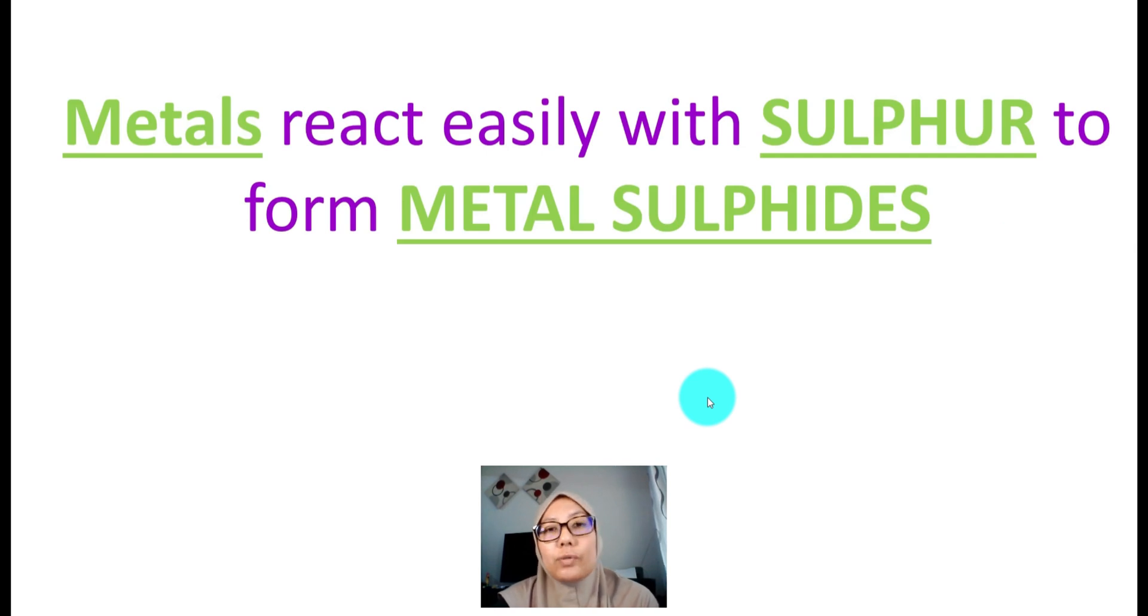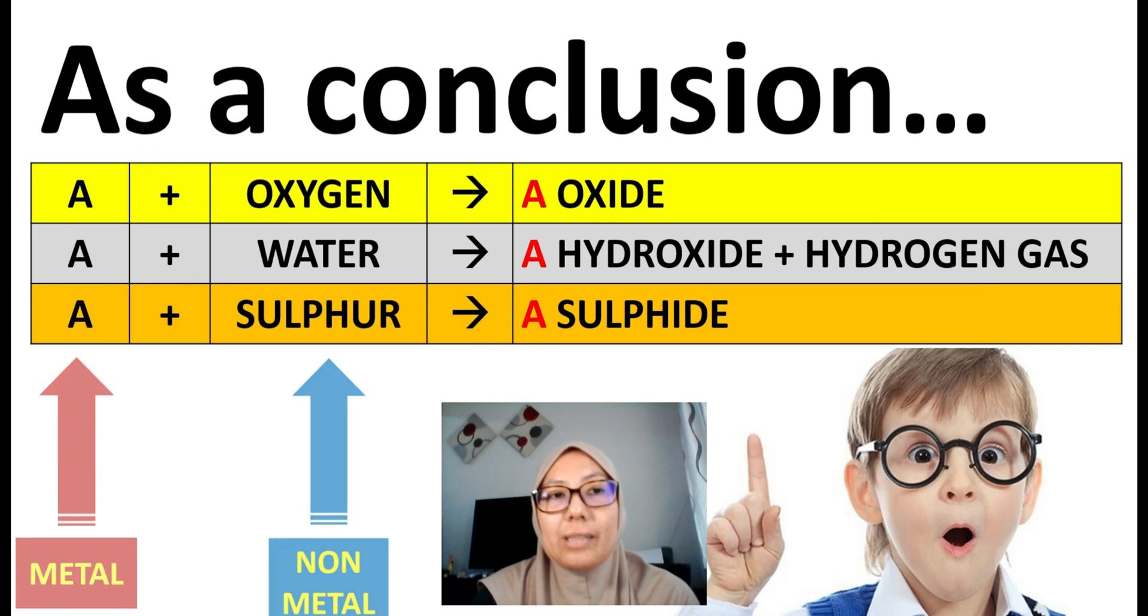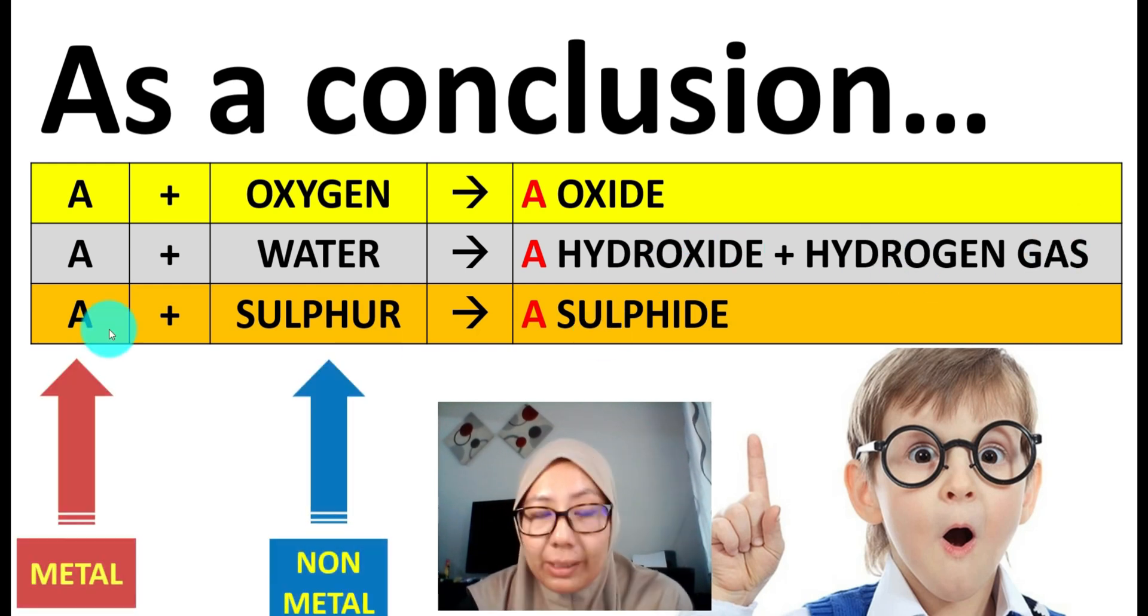Metals also react easily with sulfur to form metal sulfites. As a conclusion, today you have learned the reaction of metals and non-metals—non-metals such as oxygen, water, and sulfur. Metals react with oxygen to form metal oxide, react with water to produce metal hydroxide and hydrogen gas, and react with sulfur to produce metal sulfite.